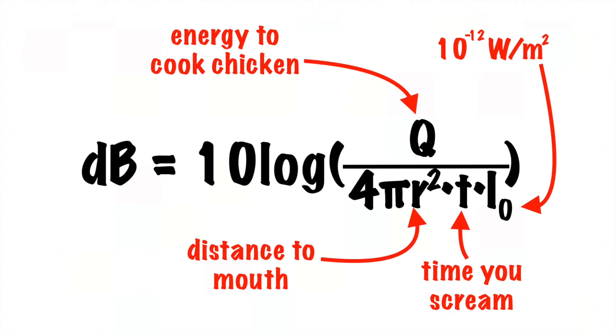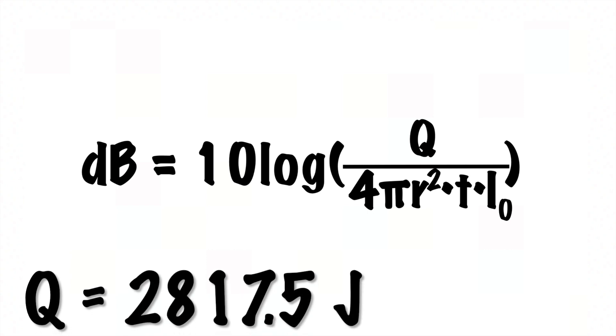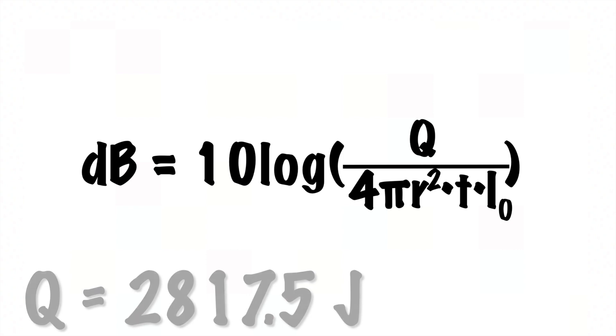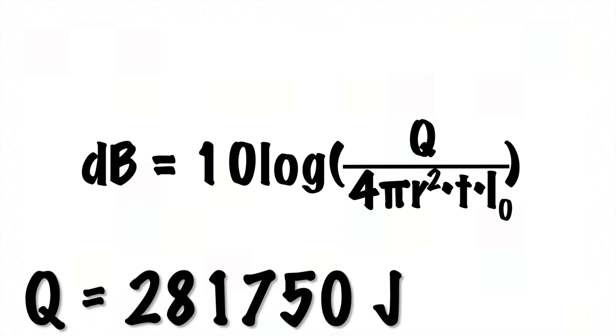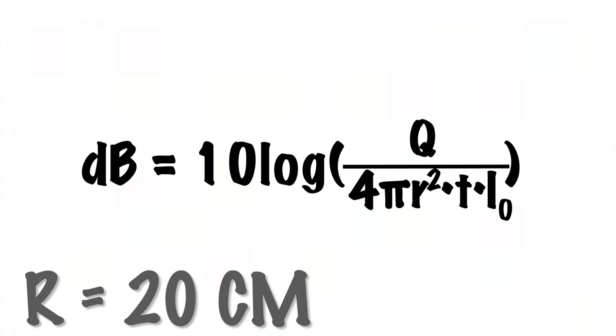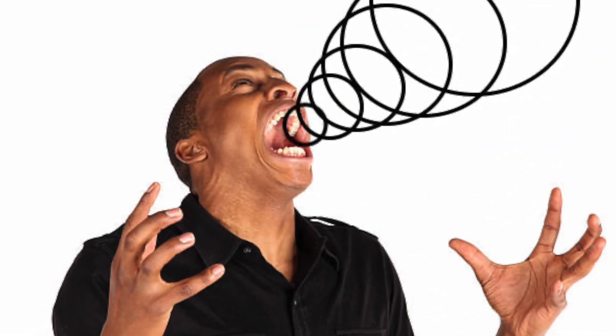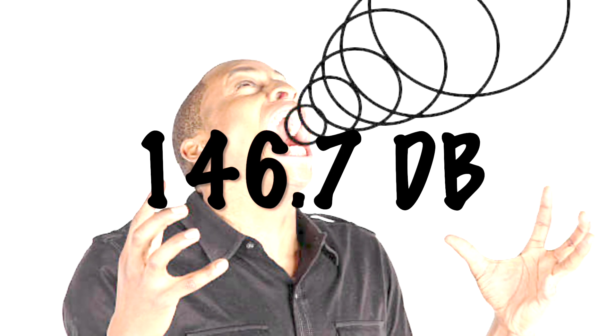Here is a reminder of what all of those variables stand for if you want a reminder. And well, let's begin. We said that the amount of energy that the chicken needs to absorb is about 2800 joules, and again we multiply that by 100 so that we have units of joules per square meter. You're going to be holding it away from your face at 20 centimeters. And if you want to cook the chicken in a reasonable amount of time, say 20 minutes, that means that you are going to have to be able to hold a 146.7 decibel scream for 20 minutes.